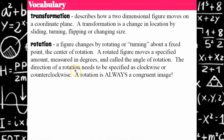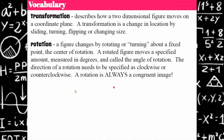The direction of a rotation needs to be specified as clockwise or counterclockwise so that you know what direction you're turning in. A rotation is always a congruent image. Just like translations and reflections, rotations must result in an image that is congruent to the original figure — it cannot change in size or shape.